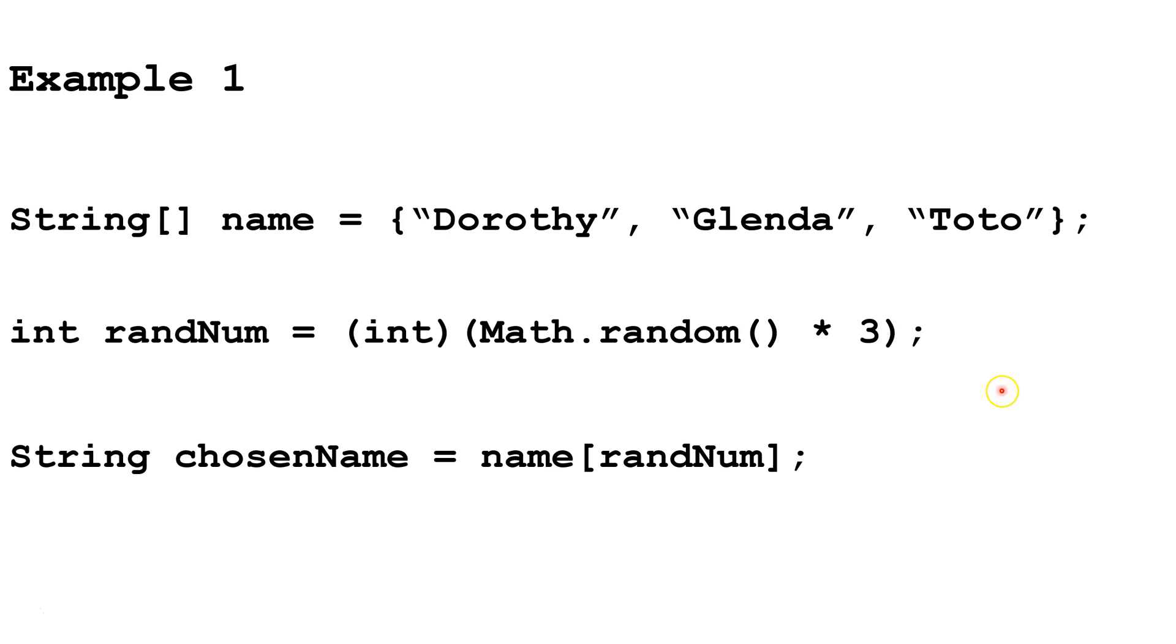Let's look at some examples of how we might use the Math.random method. Let's say we wanted to pick a random name. So, we've got an array of strings called name, and we've got three indexes, Dorothy, Glenda, and Toto. First, we're going to generate a random number between 0 and 2, because we've got index 0, 1, and 2. Then, once we had the random number, we would set our string chosen name equal to the name array and whatever random index was chosen.